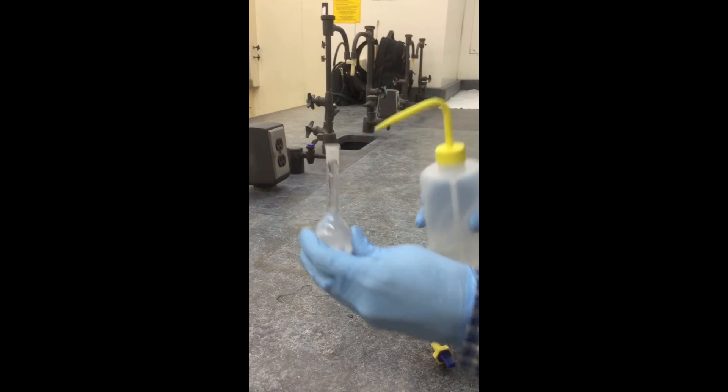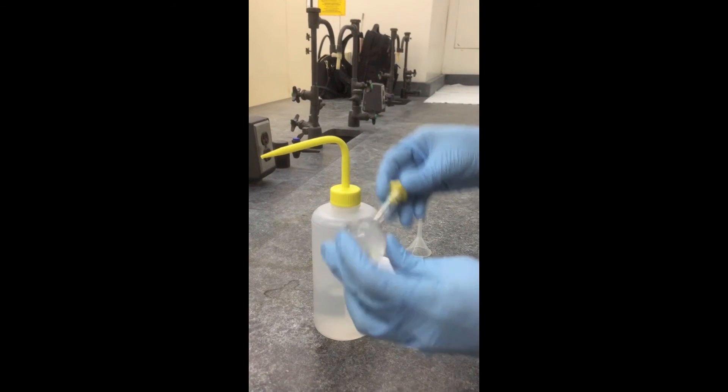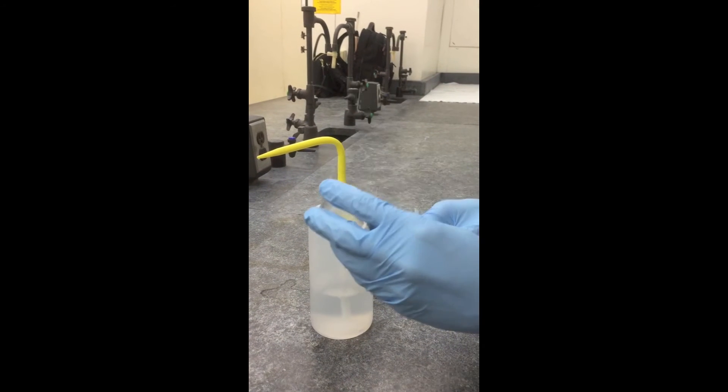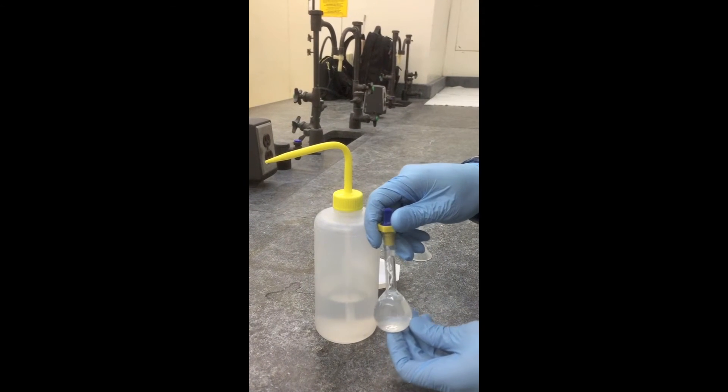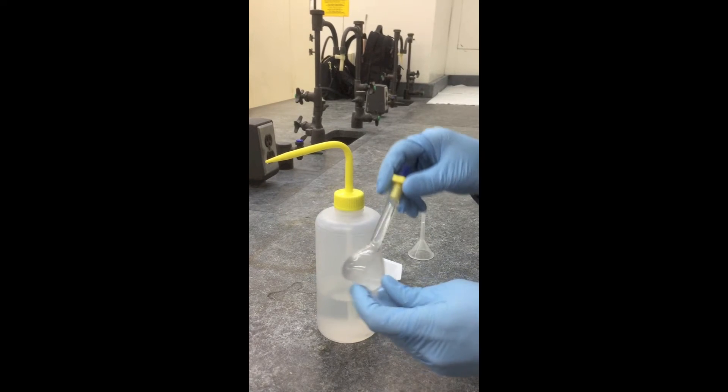Carefully add more distilled water nearing the volumetric calibration mark. Stopper the solution and invert multiple times in order to help dissolve the solute.